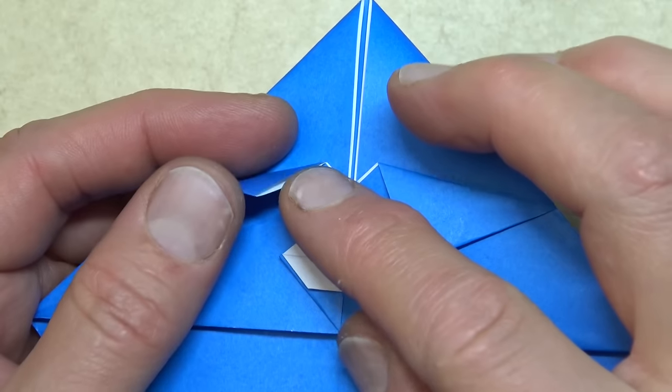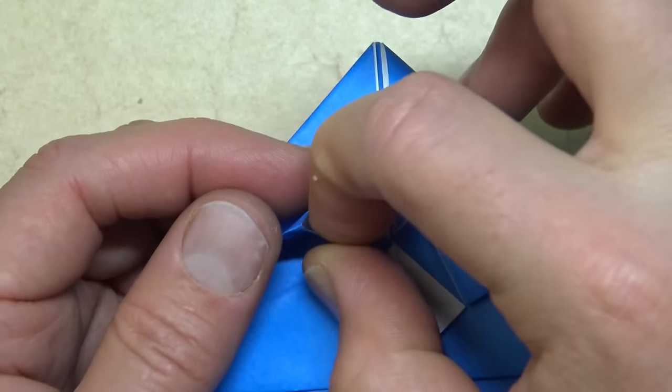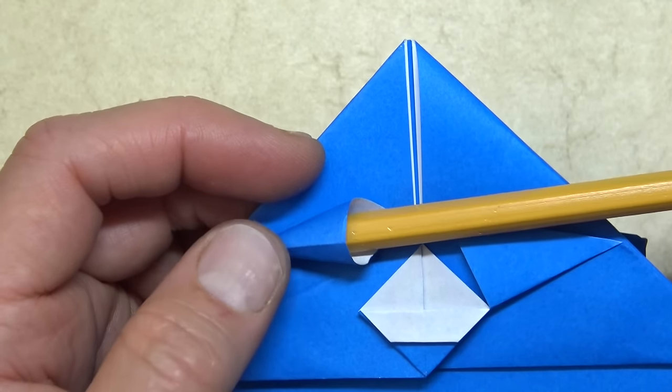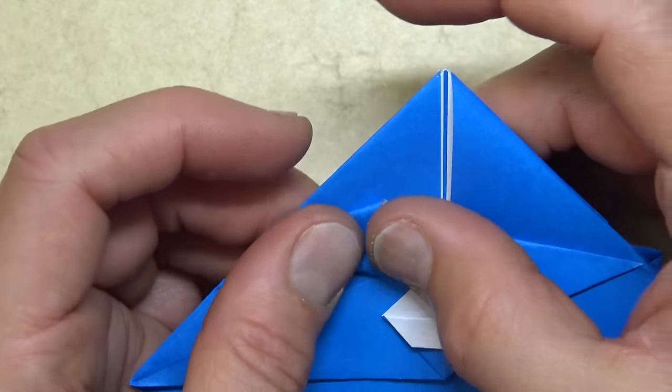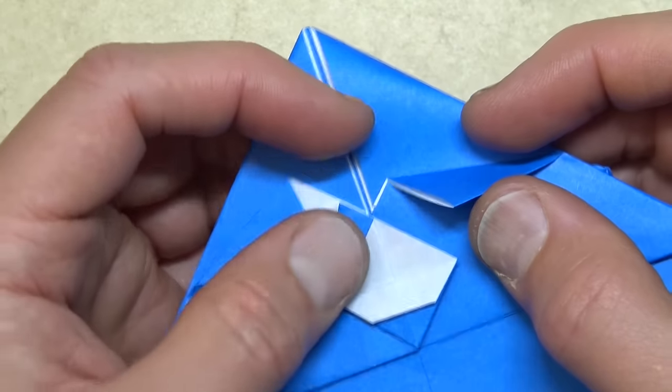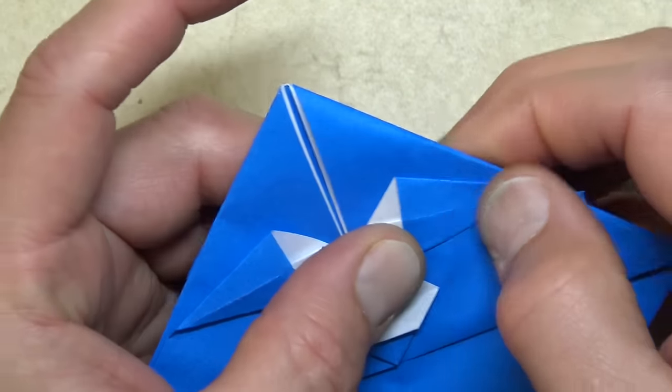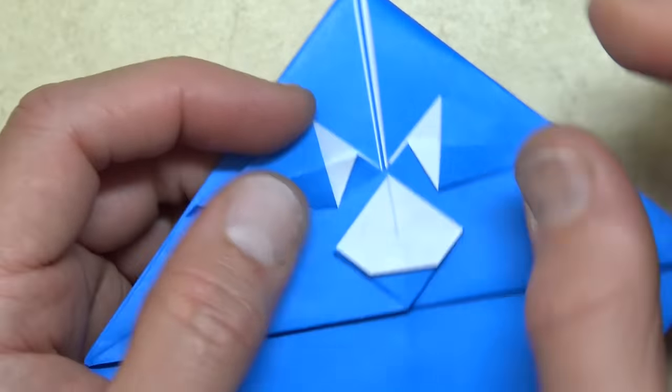Okay. Now open this pocket. And we're going to squash it. If you need to, then stick a pencil inside. But I'm using 10 inch paper. So it's pretty easy. Just like that. And repeat. Okay. Those look pretty gnarly. Those eyes.